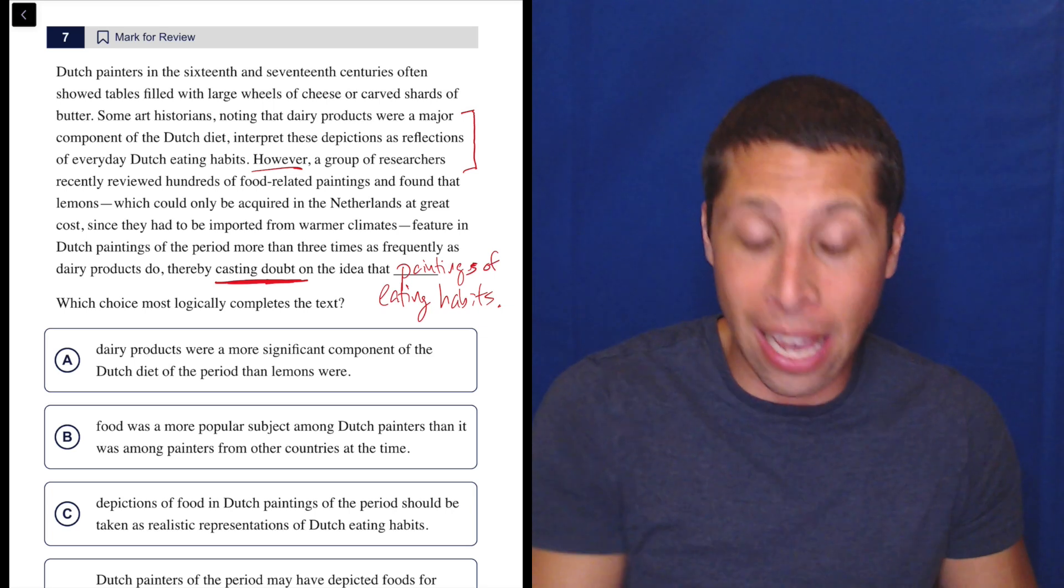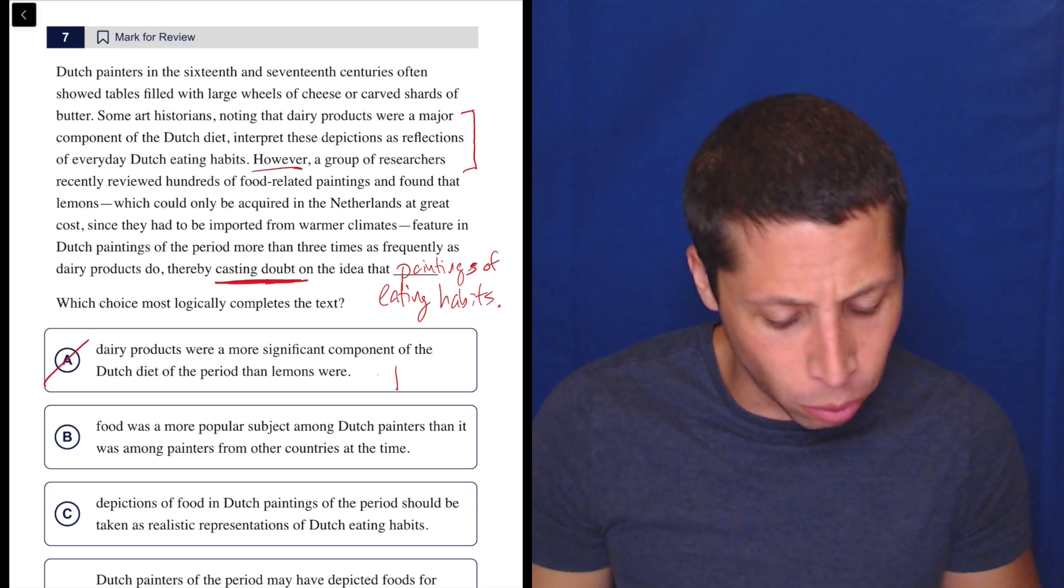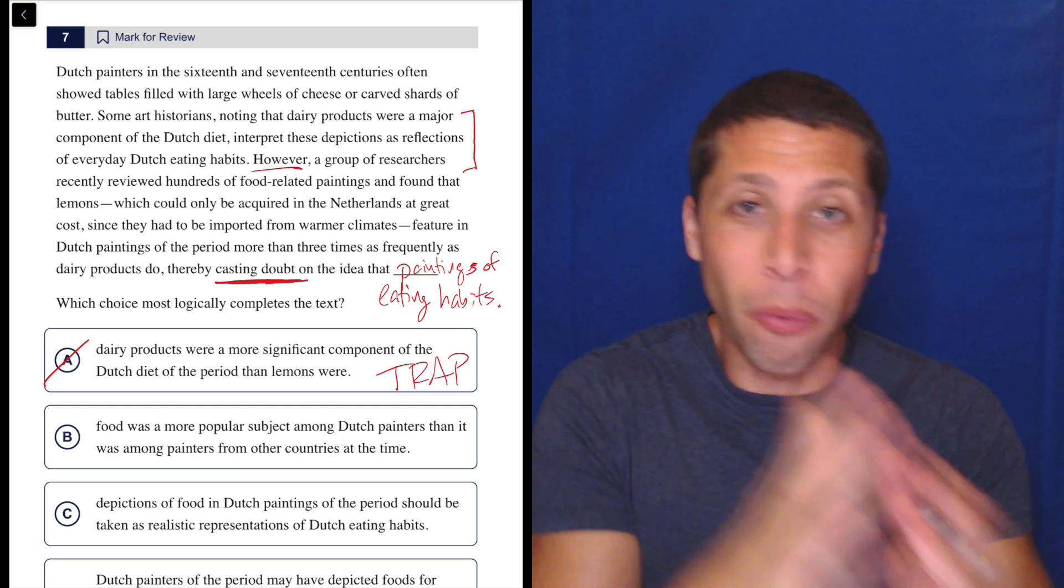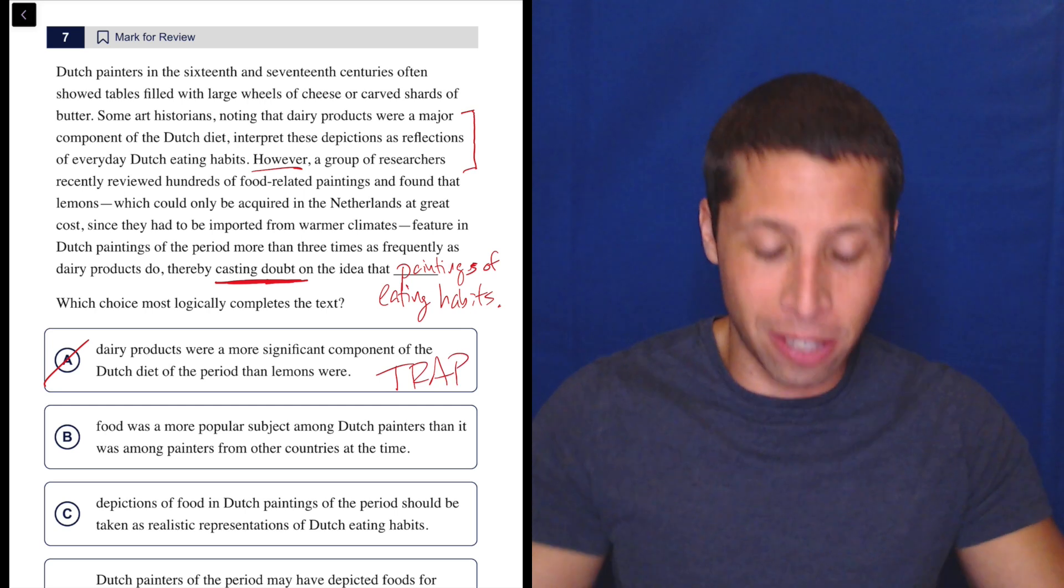That's the reason we're doubting something else. So this is a trap for sure. They know you're just going to read this and be like, oh yeah, that's what they just said. But you got to read before the blank. It says casting doubt. You don't fall for that.